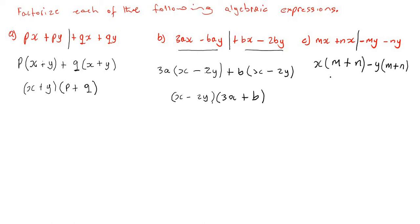We're still not finished. In the first bracket we have (m + n) and in the second bracket we also have (m + n), so they are common to both terms. We factor out (m + n), which leaves (m + n)(x − y) as the fully factorized answer.